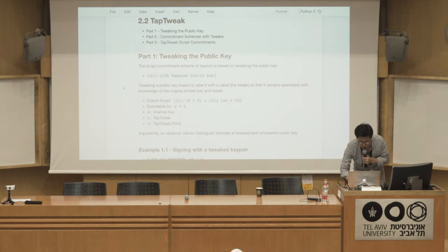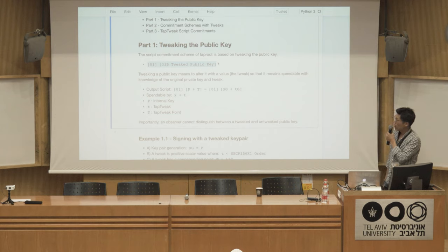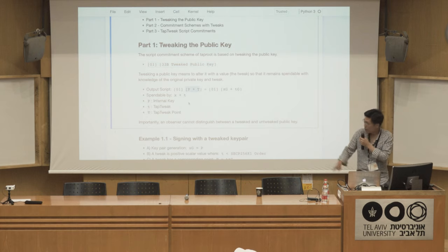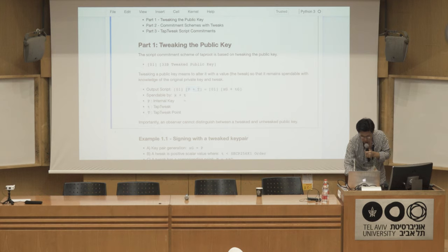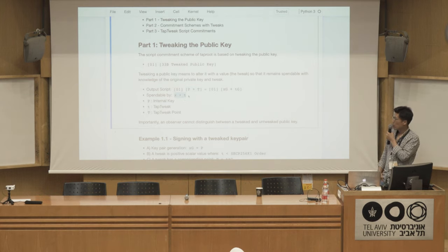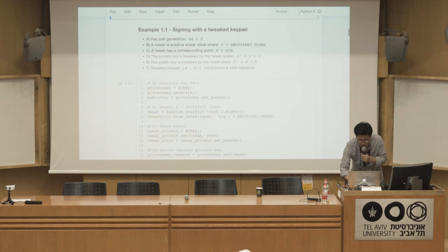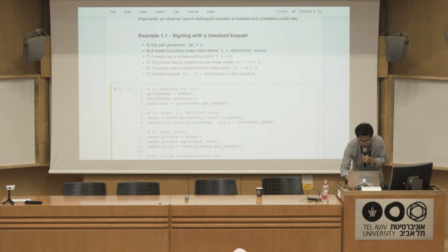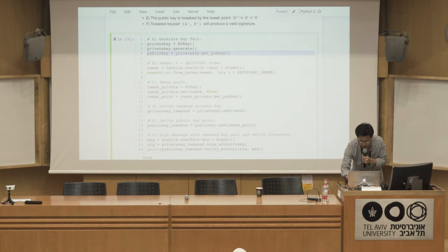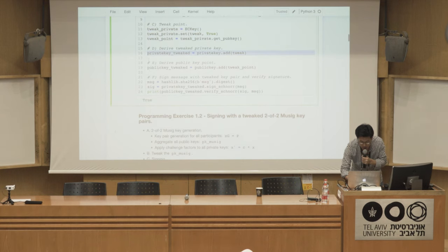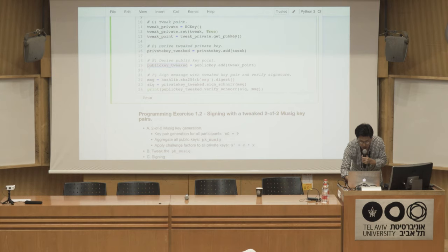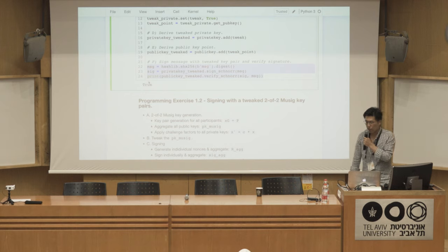Let me show a chapter on tap tweak. We have the version one output — a version byte and pubkey — and we can tweak that pubkey by modifying it with a tweak point. I can spend that tweaked point with a tweaked private key, where T is simply the scalar of the tweak point. Here we generate our key pair, create our tweak, compute the tweak point, tweak the private key with the tweak scalar, tweak the public key with the tweak point, then sign and verify the signature is correct.